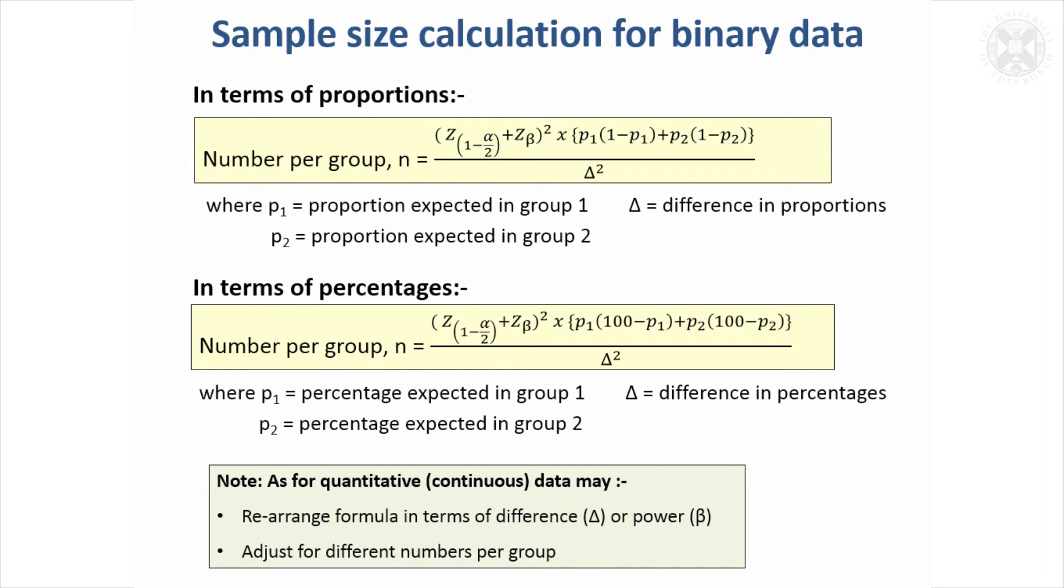So that formula was for continuous data. A very similar formula can be used if you've got binary data. If your outcome has just two categories, something either happens or it doesn't, and there are two possibilities, it's binary data.